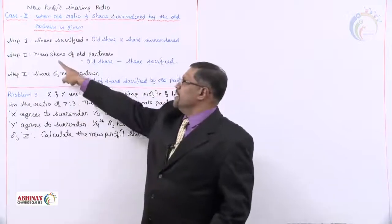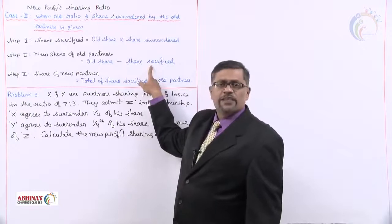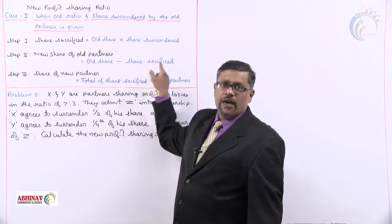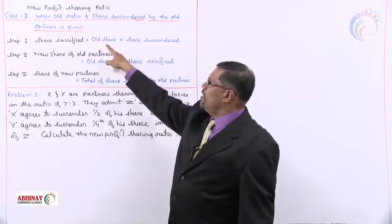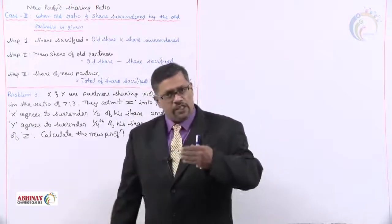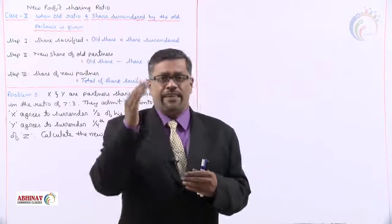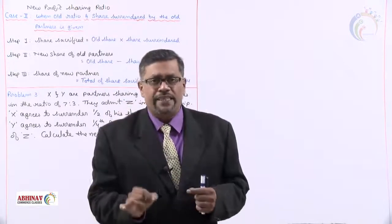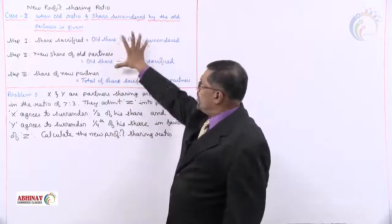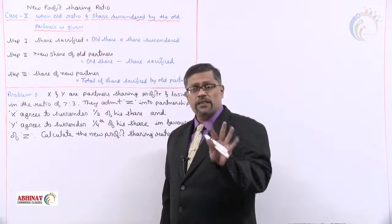The step is the same as in the last case: new share equals old share minus share sacrifice. The only difference is that we have to find out the sacrifice share. To find it: old share multiplied by the share surrendered — whatever is the share of the old partners, we see how much they are surrendering, and after multiplying we get the share sacrifice. Once you finish this, the new partner's share is not given.